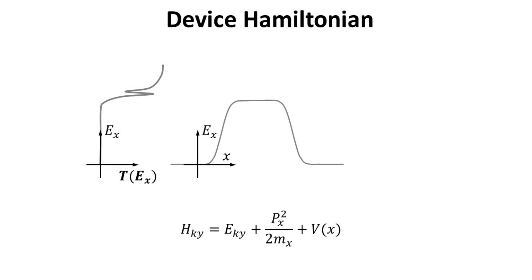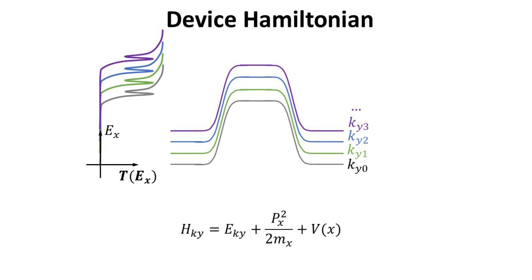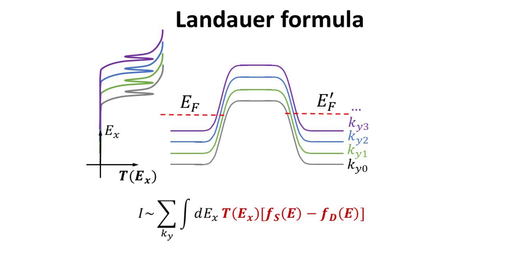This scattering problem can be solved using different approaches we discussed in previous videos, such as the transfer matrix, finite difference method, among others, and the transmission function T can be obtained. For each transverse mode KY, it yields the same transmission function, but shifted in energy as depicted.